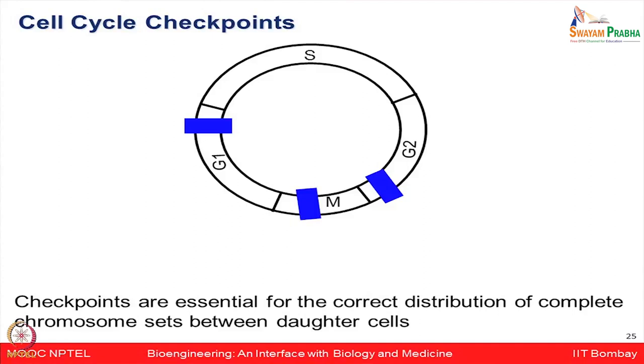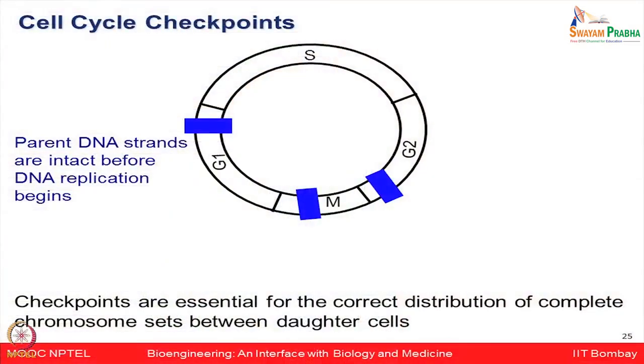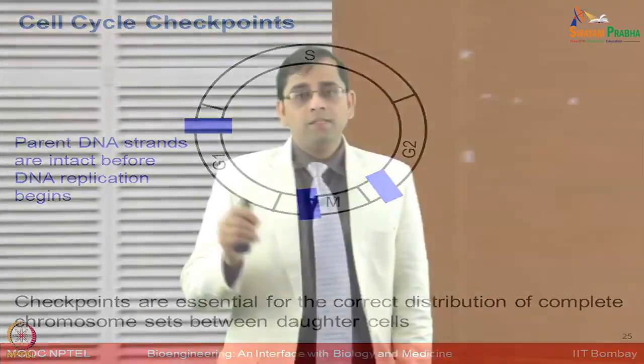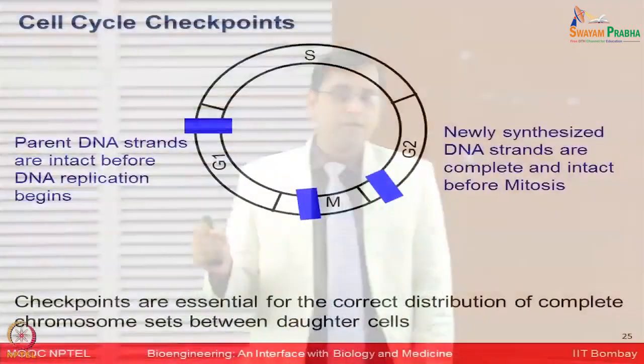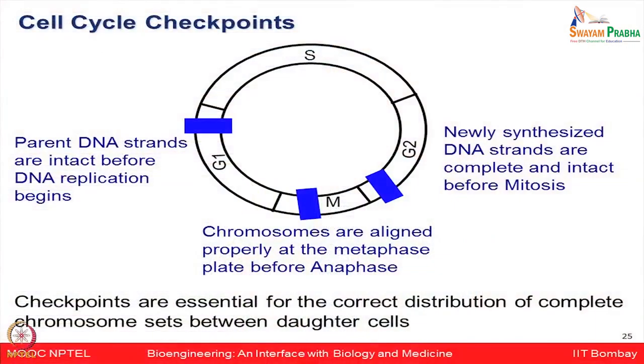The G1 checkpoint ensures parental DNA strands are intact before DNA replication begins. The G2 checkpoint ensures newly synthesized DNA strands are complete and intact before the mitotic process. The M phase checkpoint ensures chromosomes are aligned properly at the metaphase plate before anaphase. These checkpoints are essential for the correct distribution of a complete chromosome set between two daughter cells.